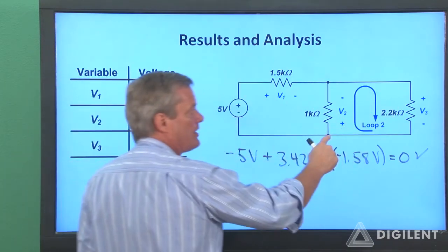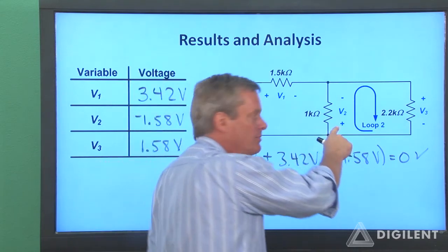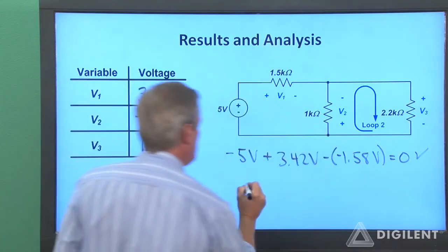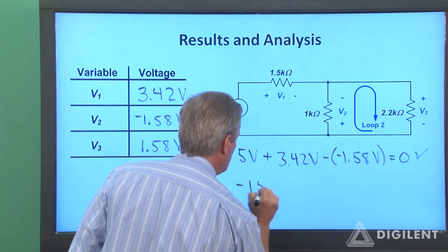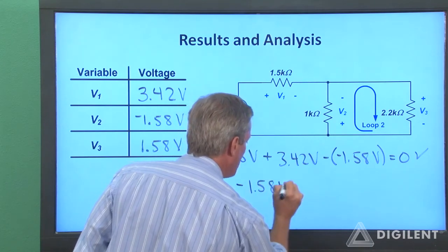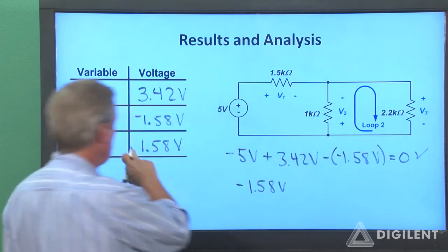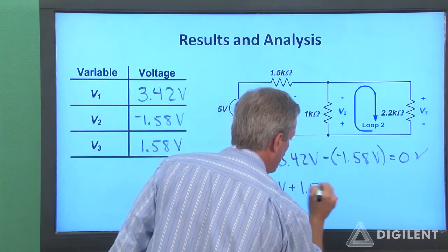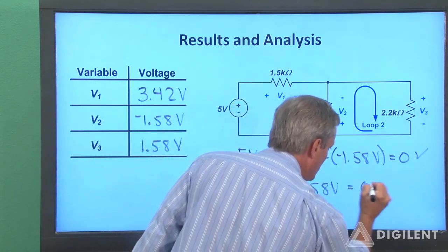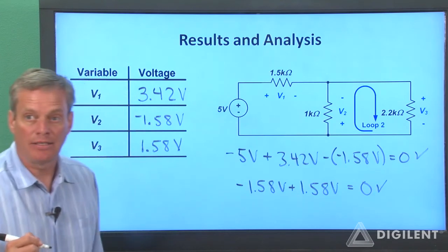For loop 2, if I start out down here, I see the positive terminal of V2 first, so it's plus V2, which turns out to be a minus 1.58 volts, plus V3, which is positive 1.58 volts. That also turns out to be exactly zero.